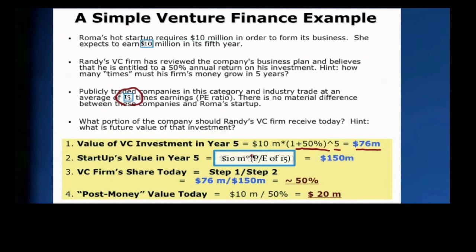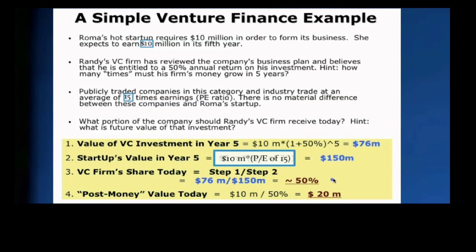So $10 million in earnings times the P/E ratio of 15 should yield a startup valuation of $150 million total. The VC firm's share today: if the firm is going to be worth $150 million and the VC investment share is going to be $76 million, that's approximately 50% that they're going to own. The post-money valuation today is going to be $10 million divided by 50%, giving a $20 million post-money valuation. So the VC investor winds up owning 50% — they put in $10 million today, giving a pre-money valuation of $10 million plus the $10 million from the VC, yielding a post-money valuation of $20 million.